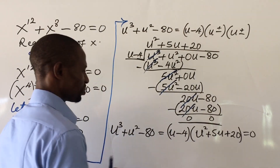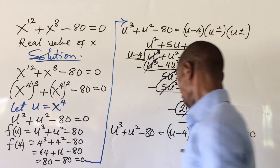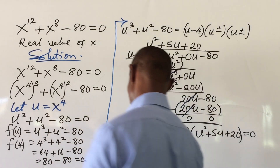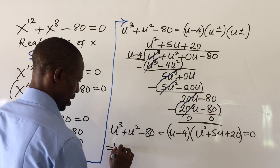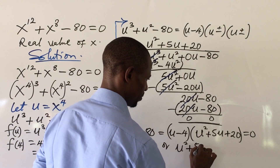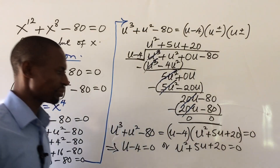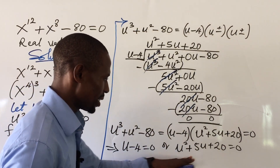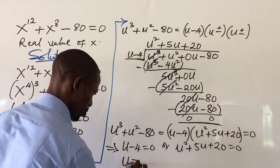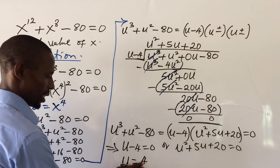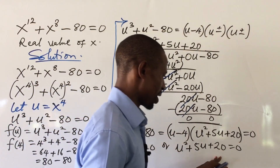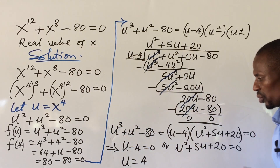By the zero product rule, we set each factor to zero. Either u minus 4 equals zero, or u squared plus 5u plus 20 equals zero. From the first factor, u equals 4. Now let's solve the quadratic — but remember, we are asked for real values of x, so let's check if this quadratic gives real values using the discriminant.